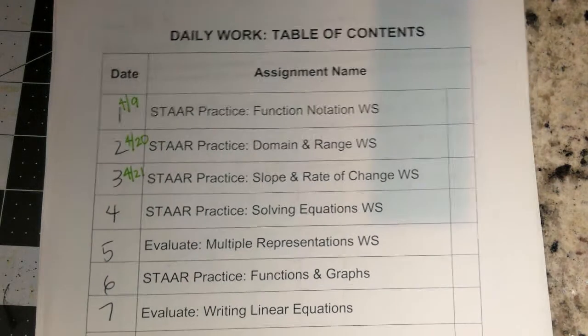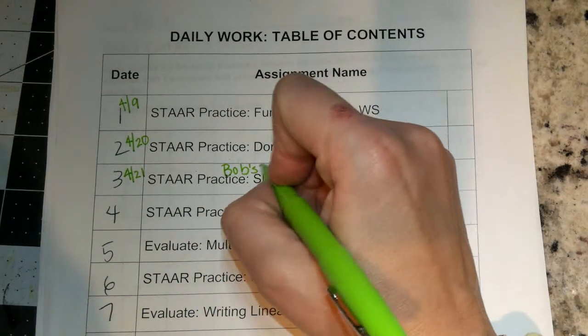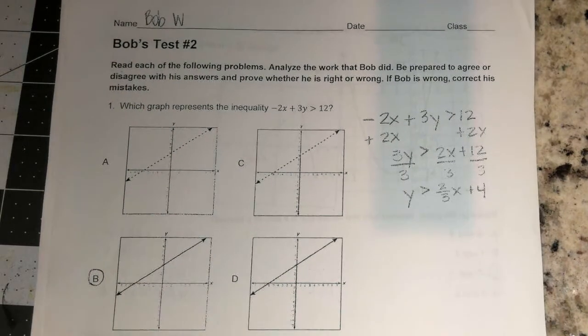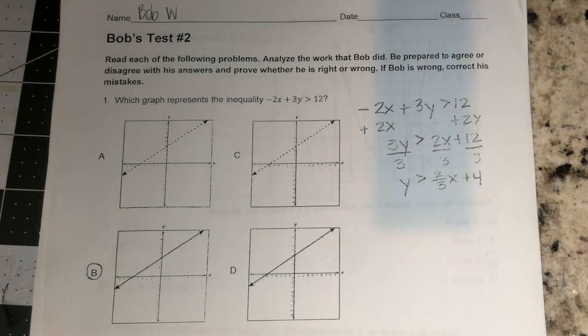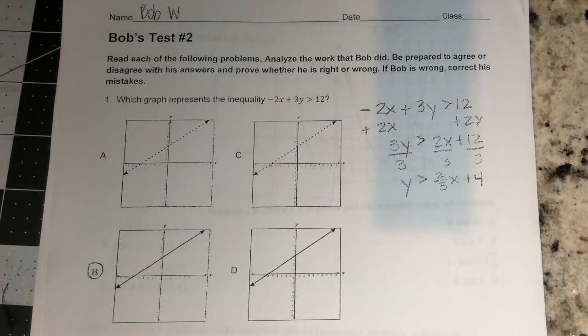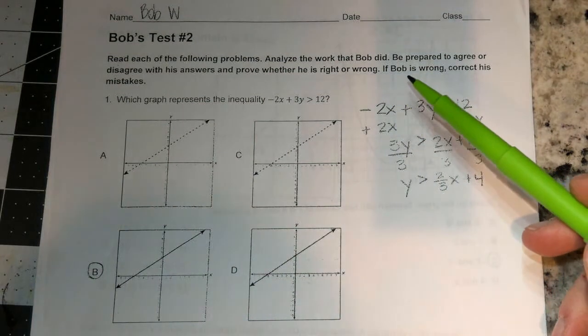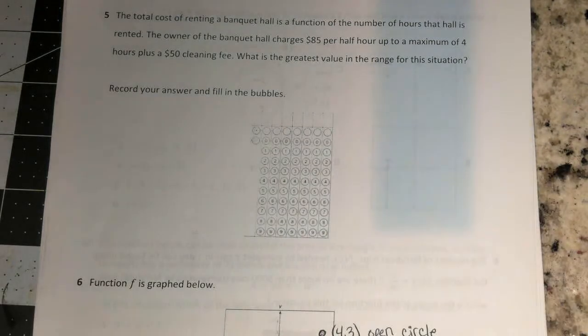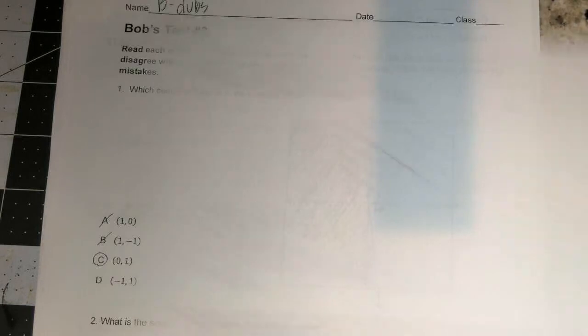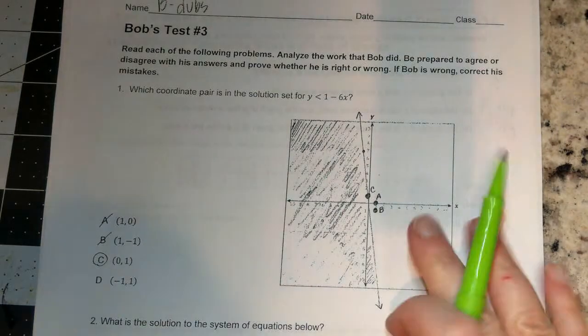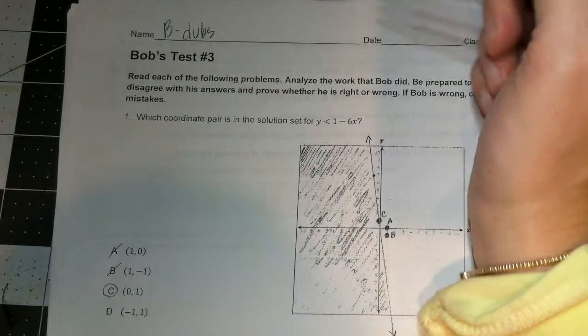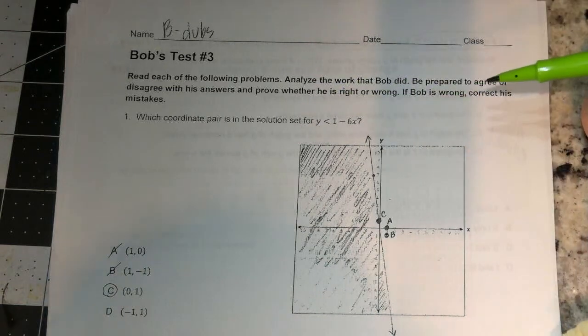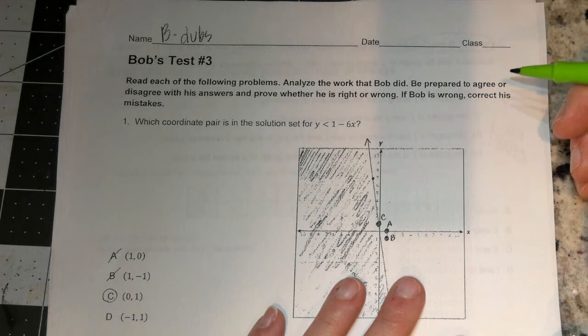So let's go ahead and we're going to go to Bob's test number 3. And then we're going to go right into the slope and rate of change worksheet. Bob's name this time is B-dubs. So we're going to look at B-dubs test. We're going to read through each of the following problems and analyze the work that Bob did. We need to be prepared to agree or disagree with his answers and prove whether or not he is right or wrong. If he's wrong, we're going to correct his mistakes.